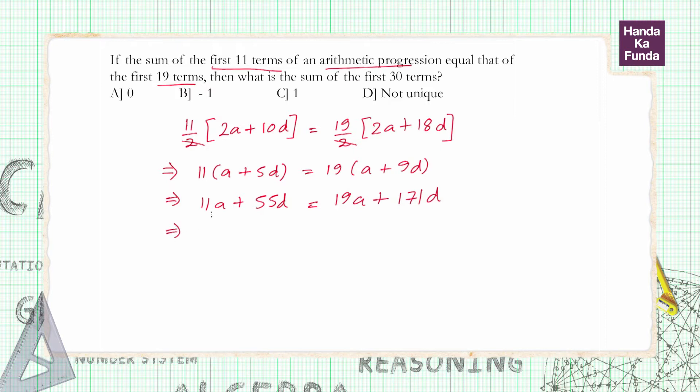So this gives me if I take 11A to the other side 8A plus 55 and 171. 171 minus 55. 170 minus 55 is 15 or 115 plus 1. So I get 116D is equal to 0.